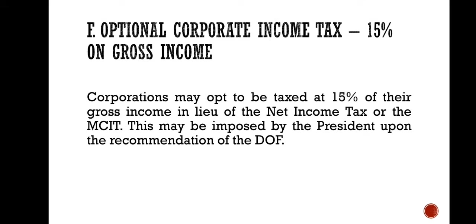Next is the optional corporate income tax, which is 15% on gross income. Corporations may opt to be taxed at 15% of their gross income in lieu of the net income tax or the MCIT. This may be imposed by the President upon the recommendation of the Department of Finance.